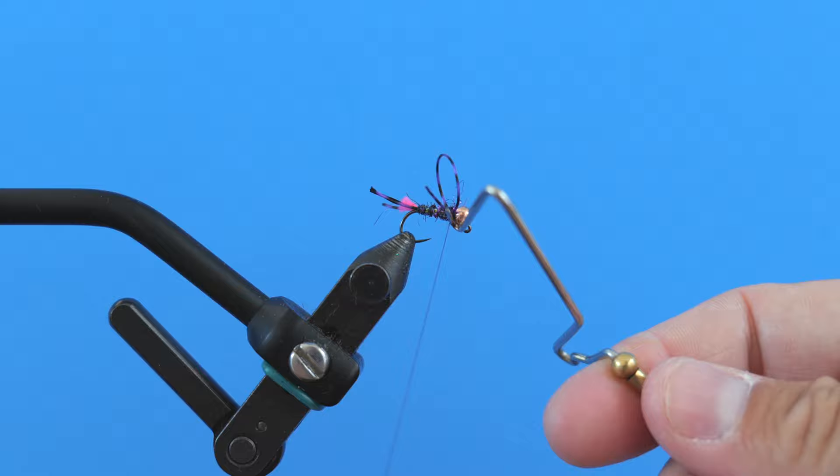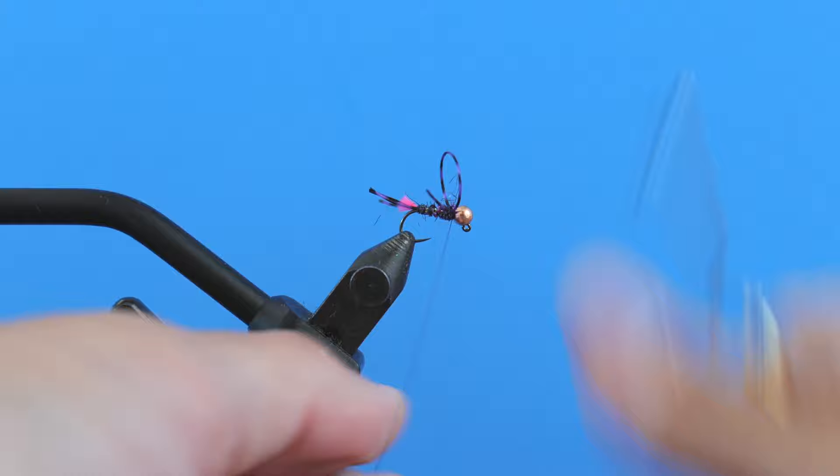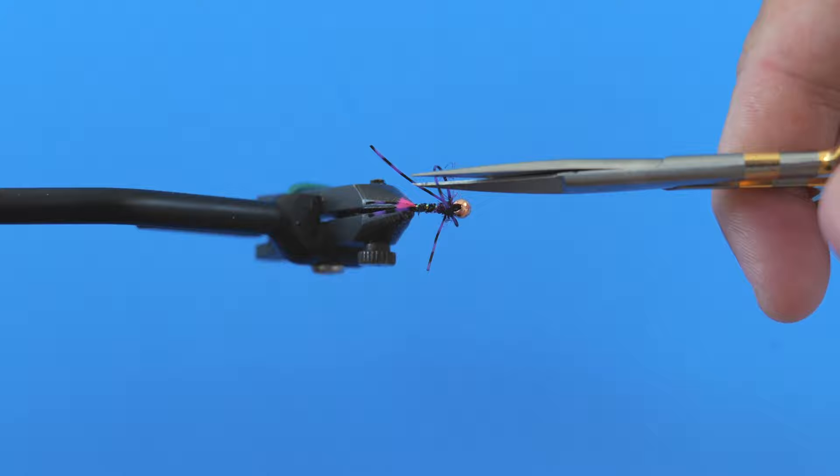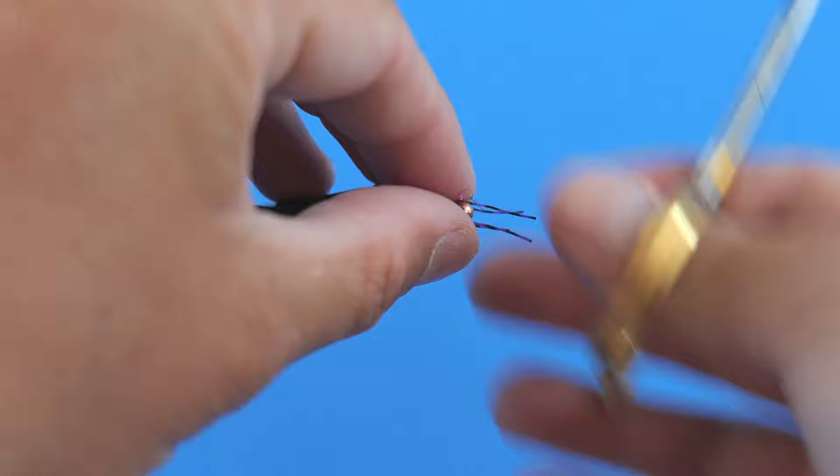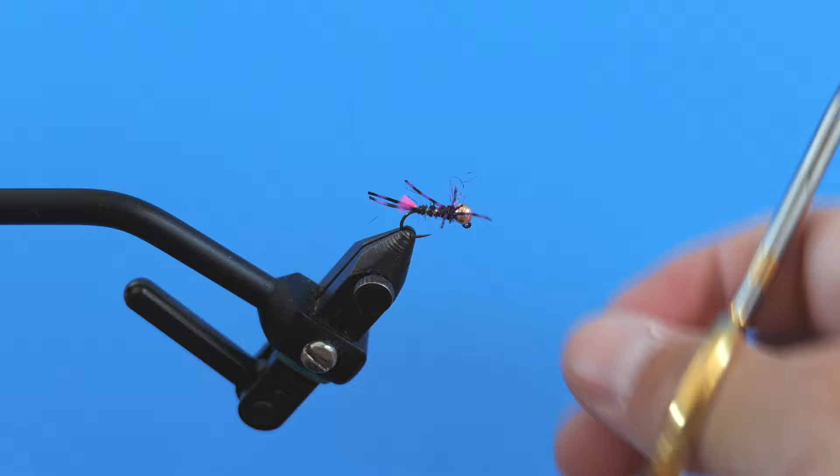We're almost done. Throw in a couple of whip finishes there. I usually do two and I don't glue. Just like that. Come in and cut that separated. So now you kind of got these crazy long legs. I'm just going to push these forward to kind of capture them and then come in and cut them all the same length.